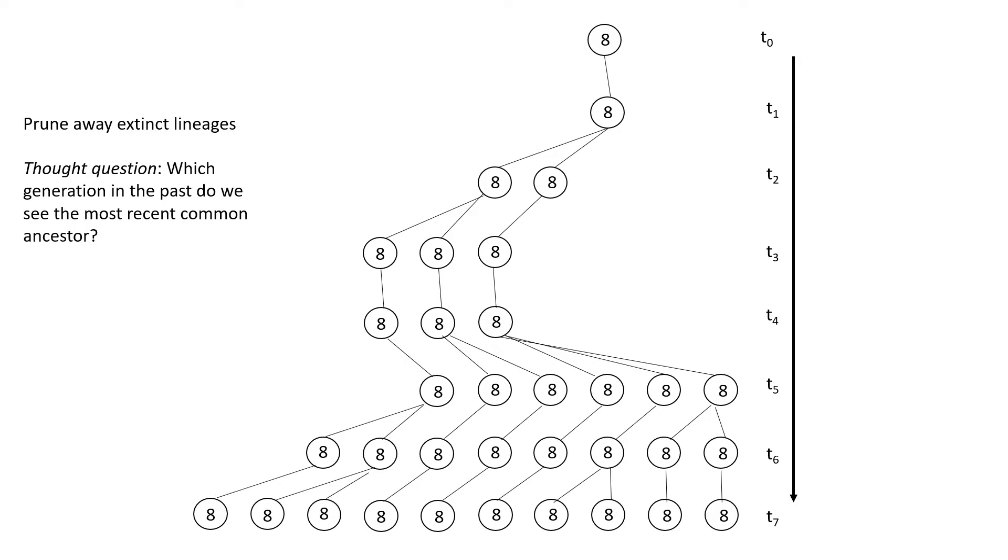Another question here, which generation in the past do we see the most recent common ancestor of all descendant individuals in our population? Well, note that we can technically follow it to here because we know that this generation exists, but is that the most recent common ancestor?